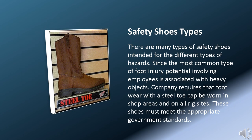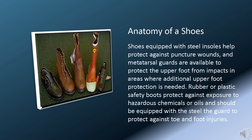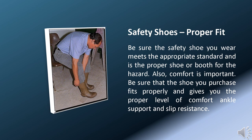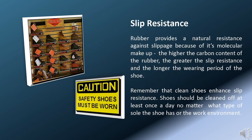Other foot hazards include chemicals and extreme temperatures. There are many types of safety shoes intended for the different types of hazards. Shoes equipped with steel insoles help protect against puncture wounds, and metatarsal guards are available to protect the upper foot from impacts. Rubber or plastic safety boots protect against exposure to hazardous chemicals or oils, and should be equipped with a steel toe guard to protect against toe and foot injuries. Be sure the safety shoe you wear meets the appropriate standard and is the proper shoe or boot for the hazard. Comfort is also important — be sure that the shoe you purchase fits properly and gives you the proper level of comfort, ankle support, and slip resistance.